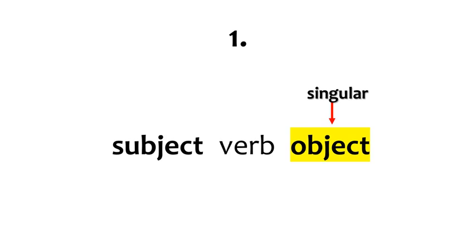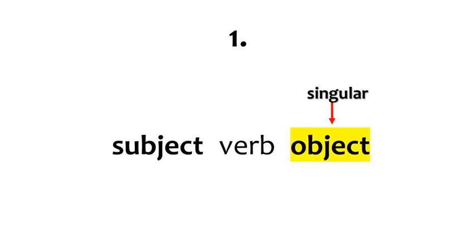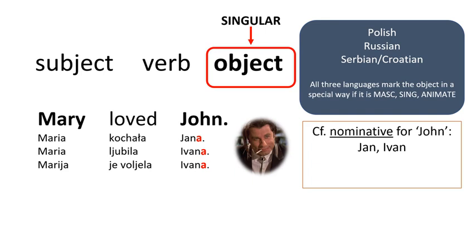All three languages under discussion mark their masculine singular animate objects in a special way. Consider this sentence: the direct object is a male human, masculine (ending in a consonant), animate (it denotes a sentient being), and singular. All three Slavic languages encode this by the ending on the direct object, which is distinct from the nominative case ending but syncretic with — that is, identical to — the genitive case ending.